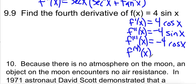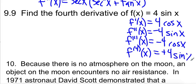The fourth derivative — written with a number in parentheses — negative 4 stays, and the derivative of cosine is negative sine, so the fourth derivative is 4 sine x.